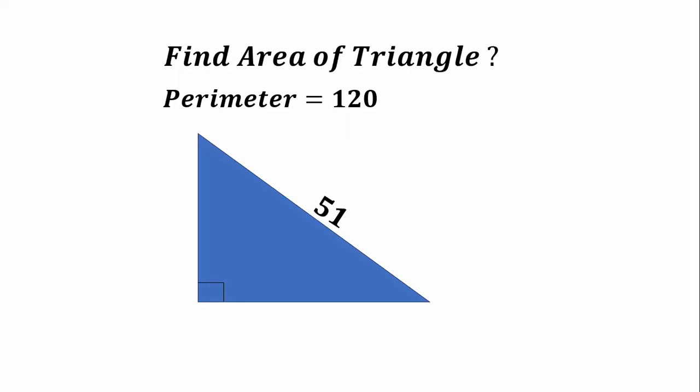This video is all about finding the area of a triangle. We are given the perimeter which is 120, and we are given the hypotenuse of the triangle which is 51. This triangle is a right angle triangle because this angle here is 90 degrees.